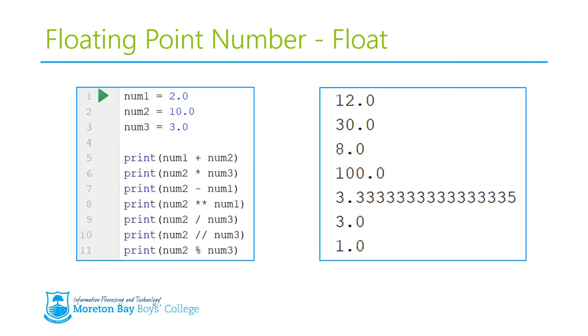And so, here we are. We've got our results here. So num1 plus num2 equals 12, so 10 plus 2 equals 12, but it's 12.0, which tells you it is a float. We've got 10 times 3 equals 30.0. 10 minus 2 equals 8.0, 10 to the power of 2 is 100. 10 divided by 3 equals 3.333 recurring. And now notice also that our floor division and our modulo still works. They still give us results, but instead of returning 3 and 1, it returns 3.0 and 1.0.